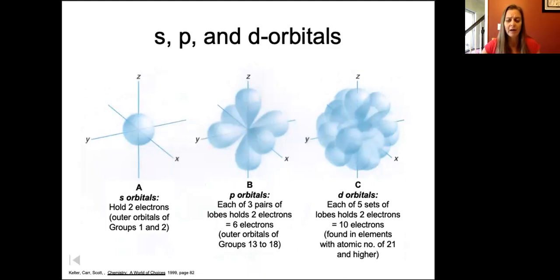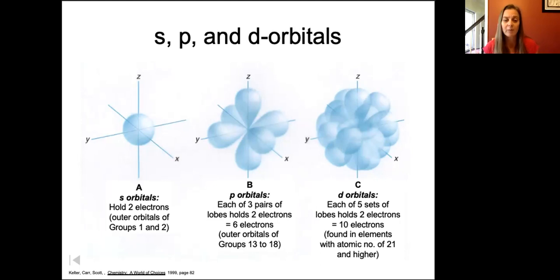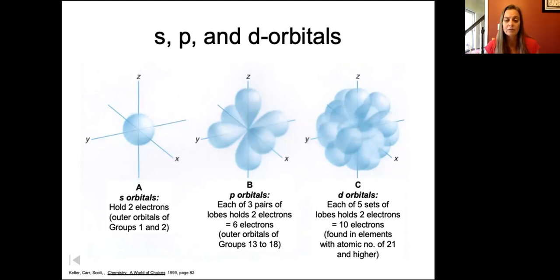Let's investigate what's happening inside those orbitals. Each suborbital can hold two electrons. At energy level one, with just one s orbital, it can only hold two. At energy level two, with the s orbital and three p orbitals — four orbitals total — we can hold eight electrons. At energy level three, with the s orbital, three p orbitals, and five d orbitals, we can hold 18 electrons. And at energy level four with s, p, d, and f, it can hold 32 electrons.